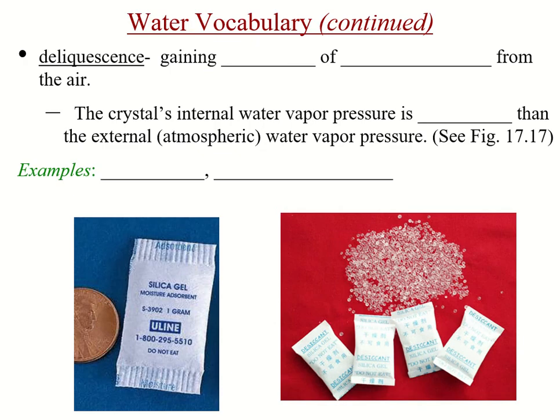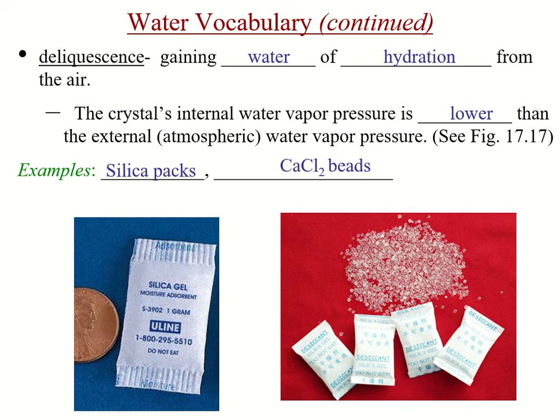Deliquescence is the gaining of water from the air. The crystal's internal water pressure in this case is lower than that of the external water vapor pressure. Some common examples are silica packs and calcium chloride beads — both are found when you buy shoes or handbags to keep moisture from building up inside them.